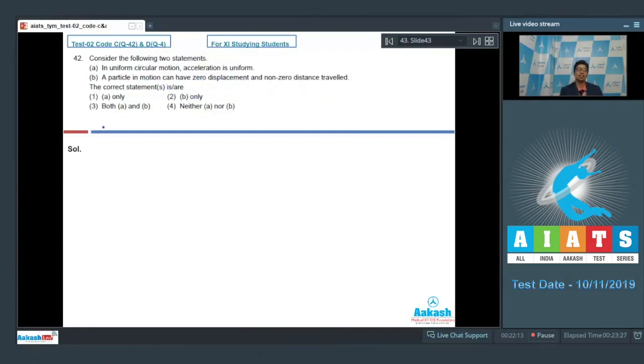Let us analyze each statement itself. First, statement A. Statement A says in uniform circular motion acceleration is uniform. This is an incorrect statement because in uniform circular motion the only acceleration that is there is the centripetal acceleration which is directed along the center. The magnitude of the centripetal acceleration, which is equal to v square by r, is constant. However, the direction of this centripetal acceleration is variable as it is always aligned from the particle to the center, and as the particle moves the direction changes as well. This means that the acceleration is actually non-uniform.